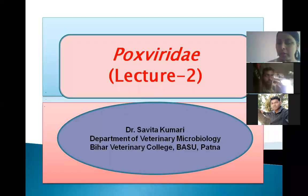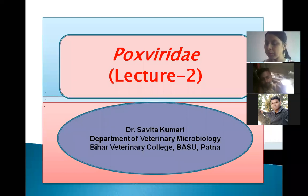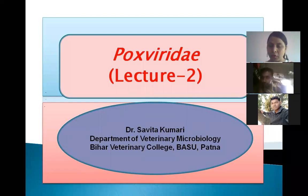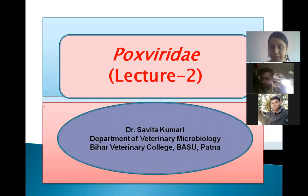Hello students, today I will continue the topic Poxviridae. As you know, Poxviridae is a virus family and it contains large double-stranded DNA viruses with complex symmetry. They cause diseases in humans as well as in animals. This includes two subfamilies: Chordopoxviridae and Entomopoxviridae. Out of these, Chordopoxviridae causes infections in humans and animals.